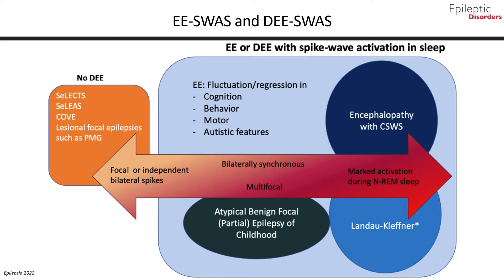Landau-Kleffner is a specific type of epileptic encephalopathy where regression affects mainly language with an acquired auditory agnosia. Specific focal epilepsy syndromes, such as self-limited epilepsy with centrotemporal spikes and self-limited epilepsy with autonomic seizures or other structural focal epilepsies, may evolve into epileptic encephalopathy with spike wave activation in sleep, either transiently or for a prolonged period.